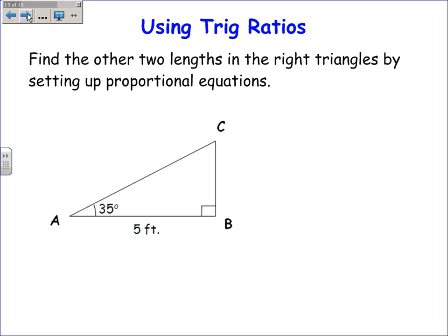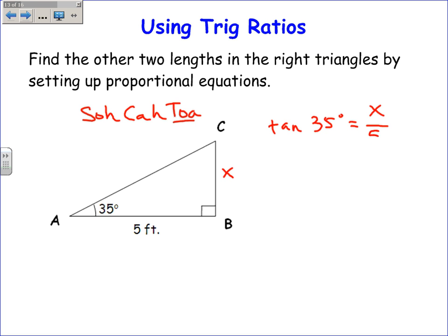Now using these ratios is where it all comes together. Given a triangle with one known angle and one known length, we can find any other length. For example, to find length CB: I know the adjacent and want to find the opposite, so I use the tangent. The tangent of 35 degrees equals opposite over adjacent, or x over 5. Cross-multiplying gives x equals 5 times tangent of 35, which calculates to 3.50.